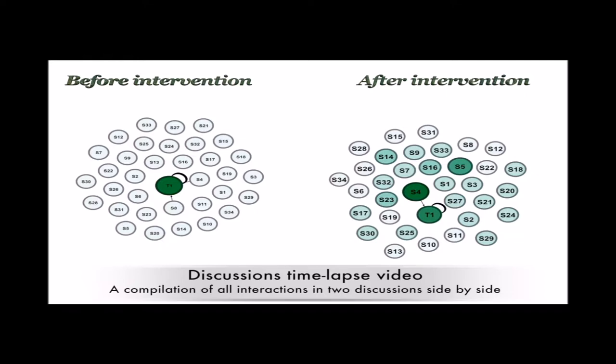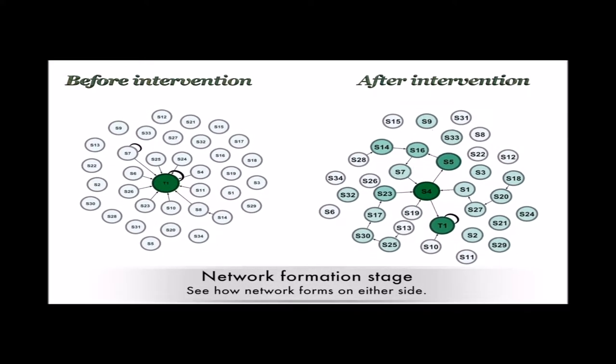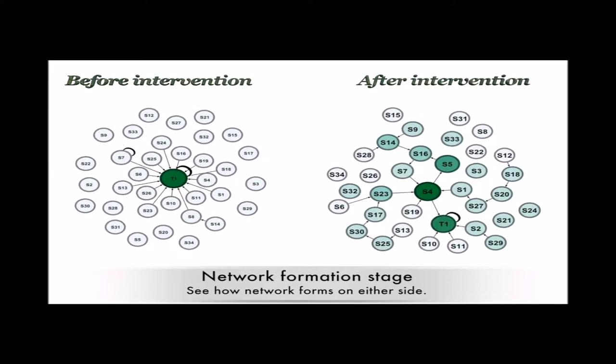Each circle represents a participant. Circles marked as S1 to S2 are students, circle T1 represents the teacher. Watch the network's form, compare the pace and distribution of interactions among participants on either side.